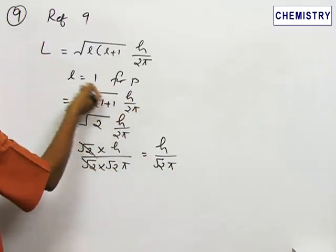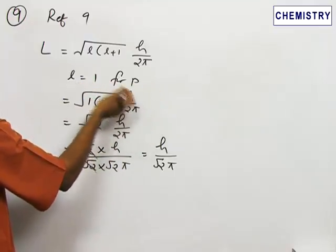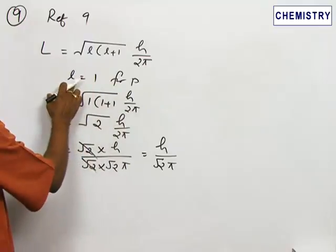Suppose if it is D, L will take the value 2. If it is F, L will take the value 3. For S, for spherical, there is no L value.